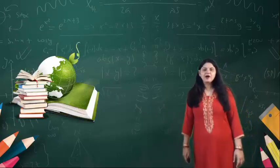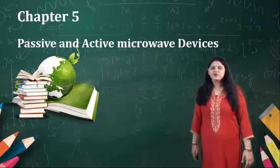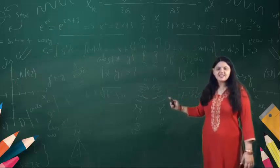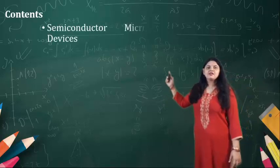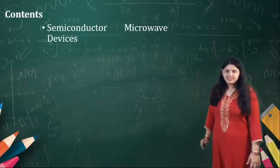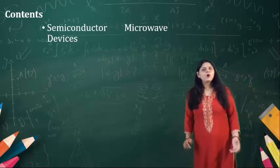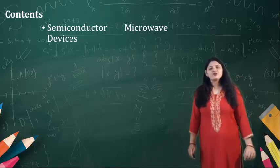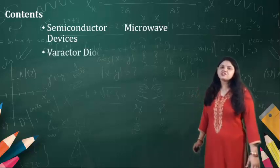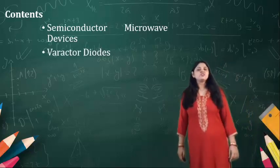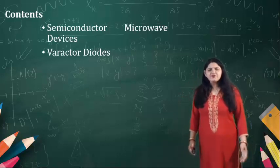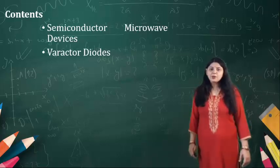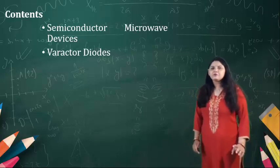In the last video, we have seen about the various passive microwave components. Now, the microwave solid state devices. Under this, we are going to learn about the semiconductor microwave devices. As we know that all the semiconductor microwave devices, or the diodes, they are made up of semiconductor material and which uses the junctional property. So whenever we want to change the designed property, we need to play with the junctional property of the semiconductor material.